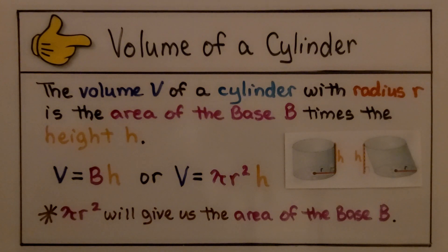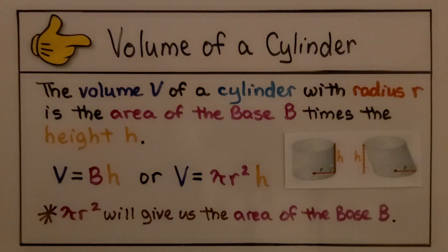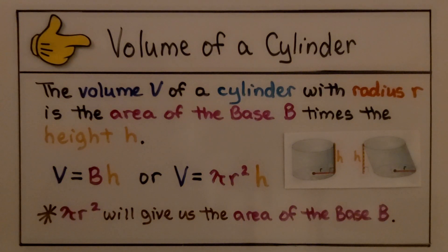So for your notes, this is the volume of a cylinder. The volume V of a cylinder with radius r is the area of the base B times the height h.